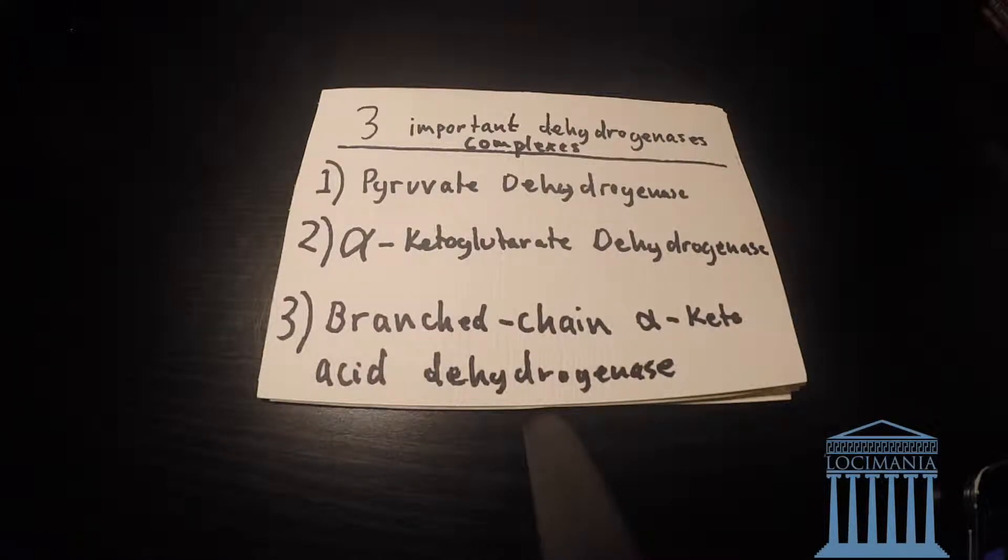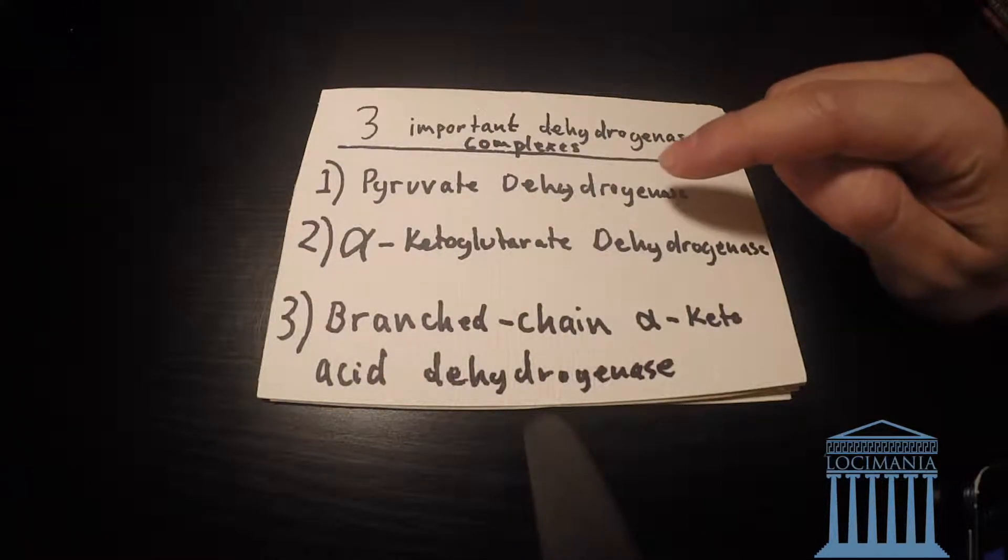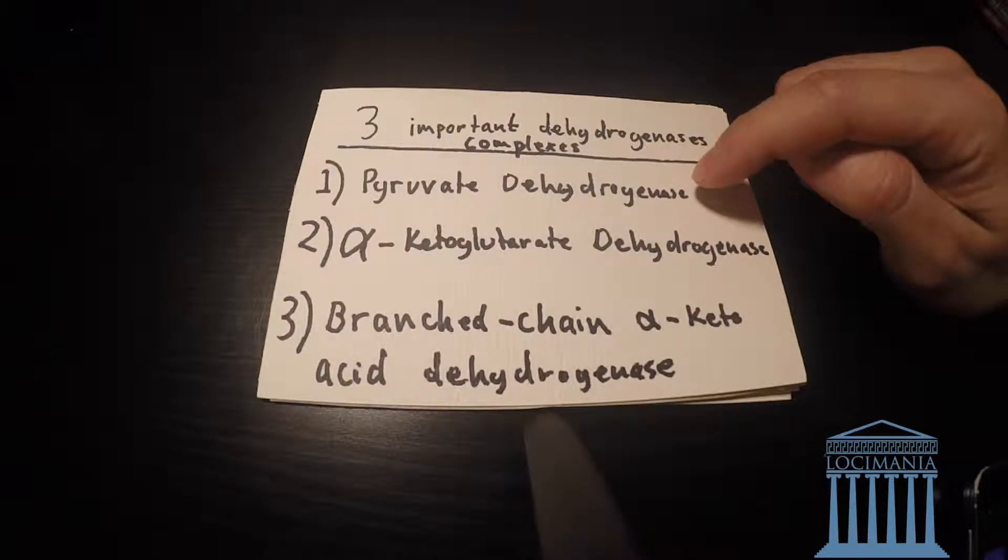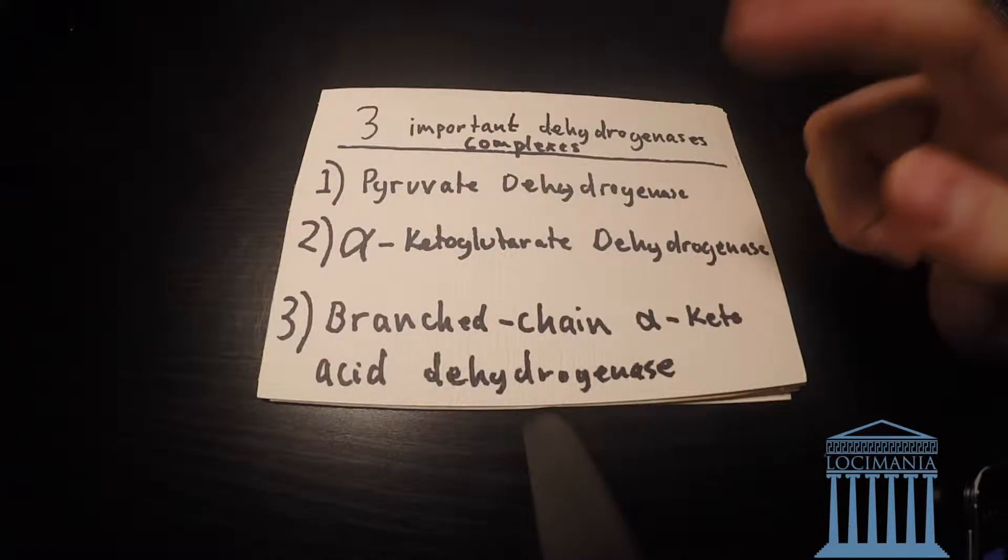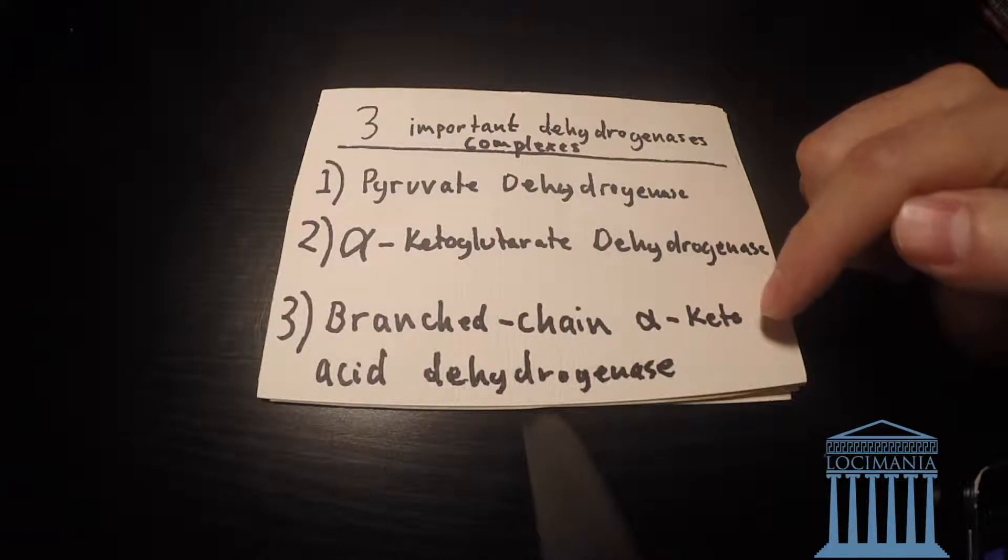Hello and welcome to Loci Mania. Today we're going to speak about the three most important dehydrogenase complexes. The first one is pyruvate dehydrogenase, second one is alpha-ketoglutarate dehydrogenase, and the third one is branched-chain alpha-ketoacid dehydrogenase.